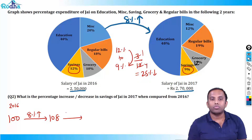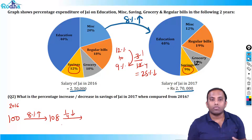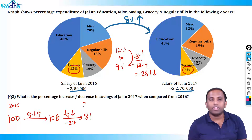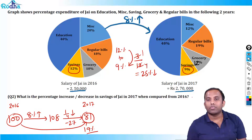So that is 1/4 decrease. What is 1/4 of 108? Half of 108 is 54, half of 54 is 27. So 27 decrease — it becomes 81. In 2016 it was 100; in 2017 it has become 81. From 100 to 81, what is the percentage decrease? 19%.